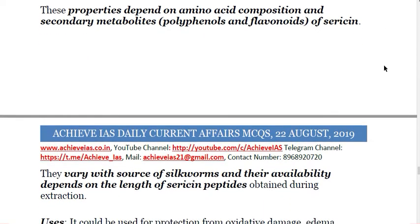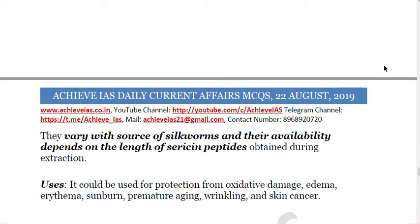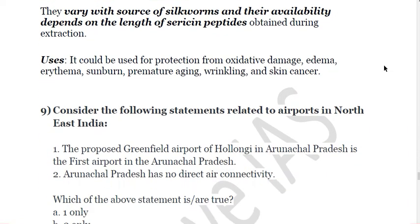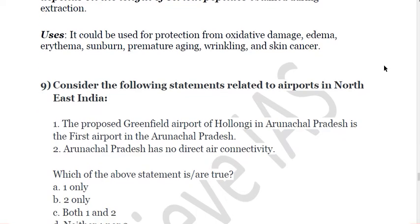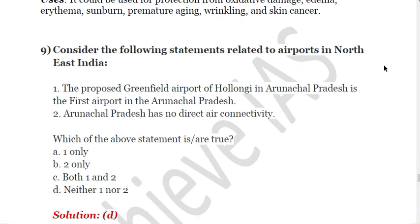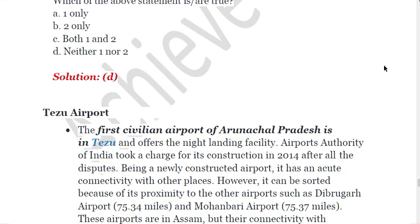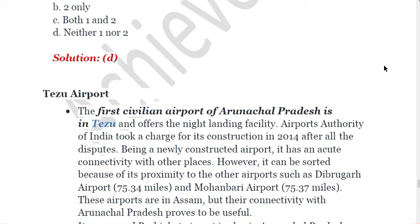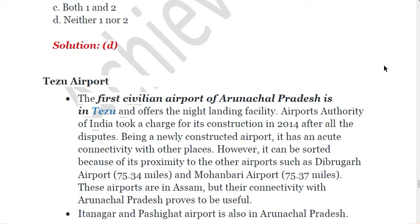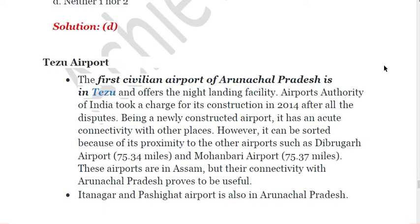Next question: consider the following statements related to airports in northeastern India. First, the proposed greenfield airport of Halongi in Arunachal Pradesh is the first airport in Arunachal Pradesh. Second, Arunachal Pradesh has no direct air connectivity. Both of these are incorrect. It is not the first airport proposed in Arunachal Pradesh — Tezu airport was already the first civilian airport there. And since there is already a civilian airport, air connectivity exists, though connectivity issues remain. These can partly be addressed due to proximity to Dibrugarh airport and Mohanbari airport. The answer is D — neither one nor two.